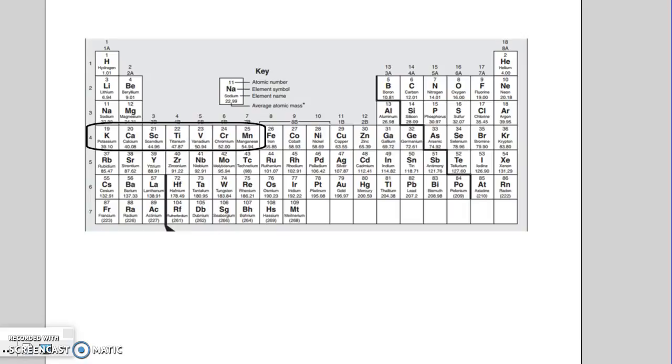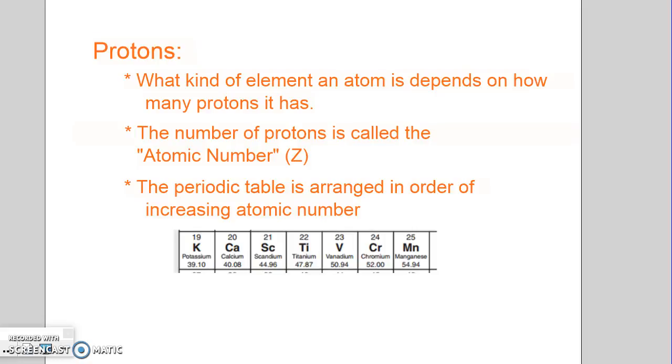And so we can kind of pull one particular section out here and kind of look at it. We can see that as you go left to right, they increase, 19, 20, 21, 22, and those numbers are the numbers of protons. So potassium's Z number is 19, every potassium atom has 19 protons, every titanium atom has 22 protons.